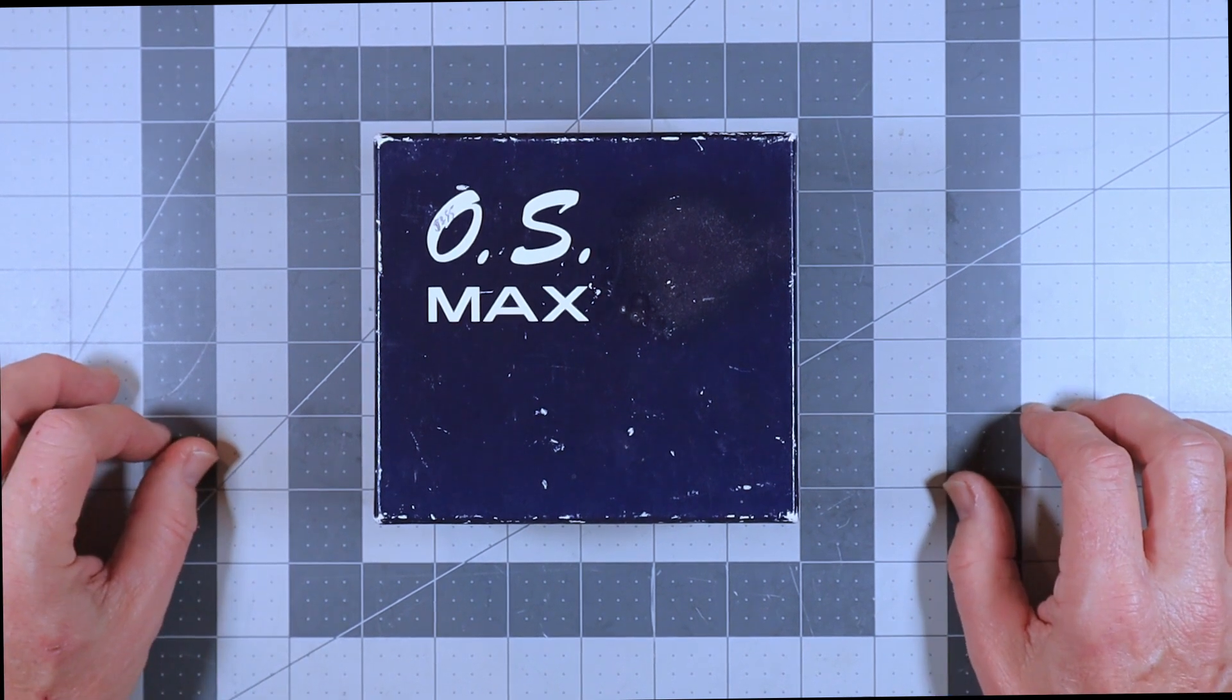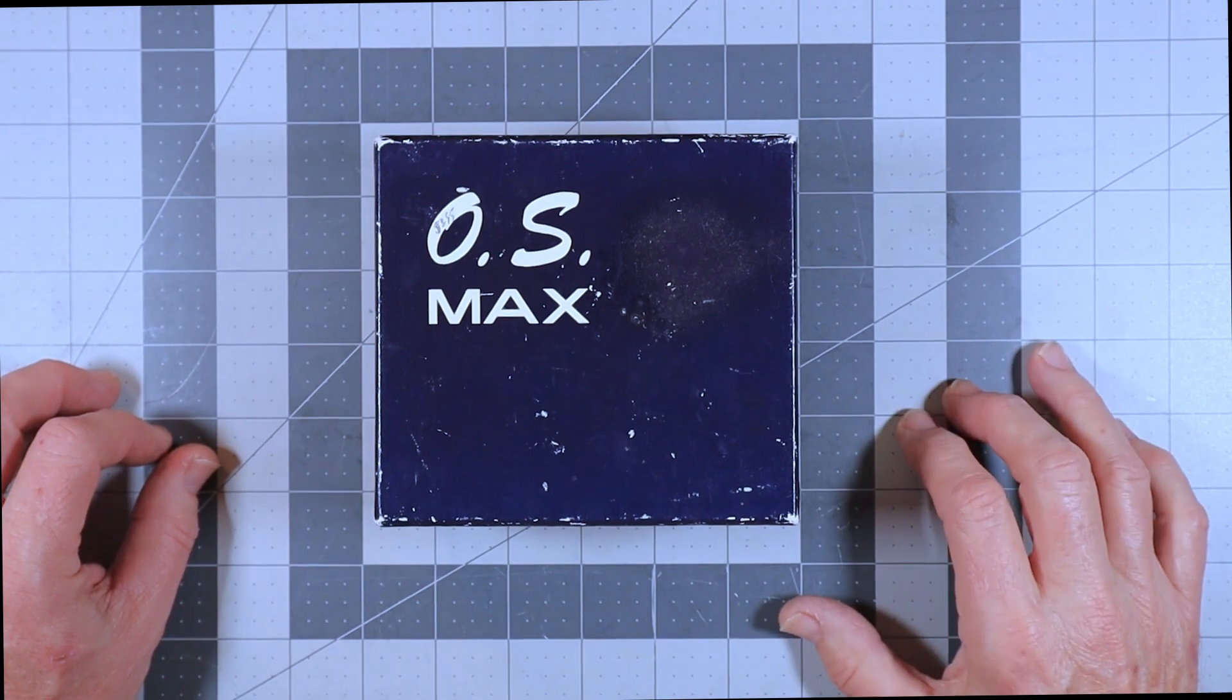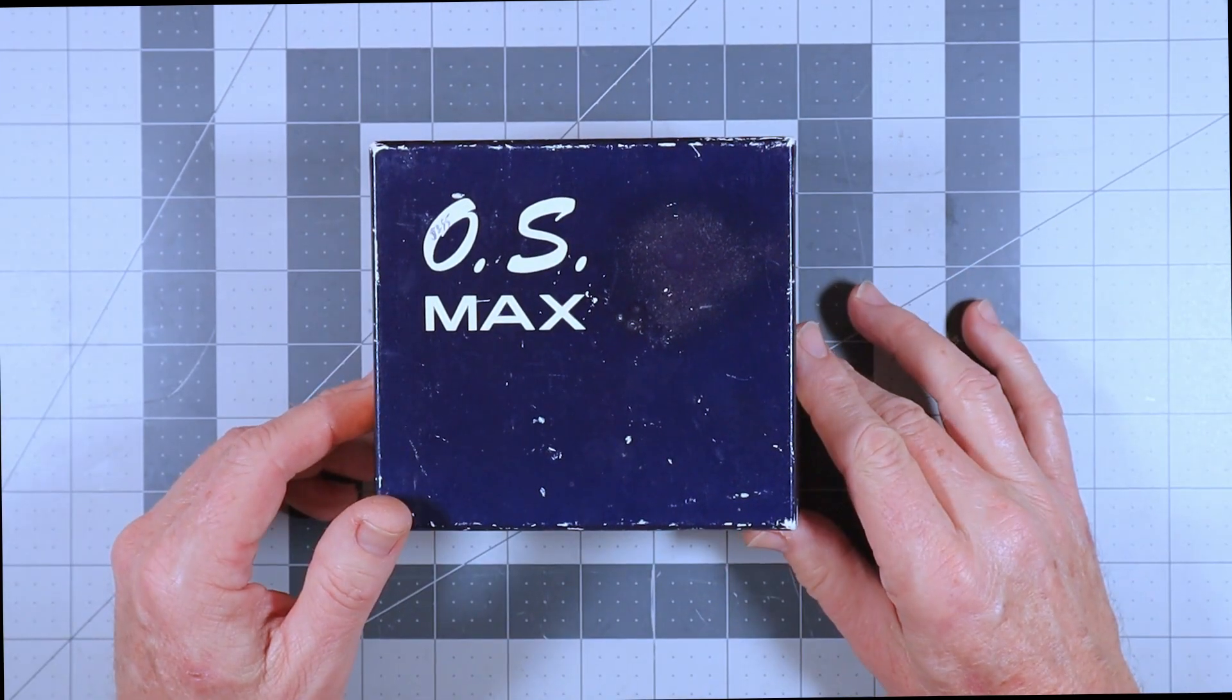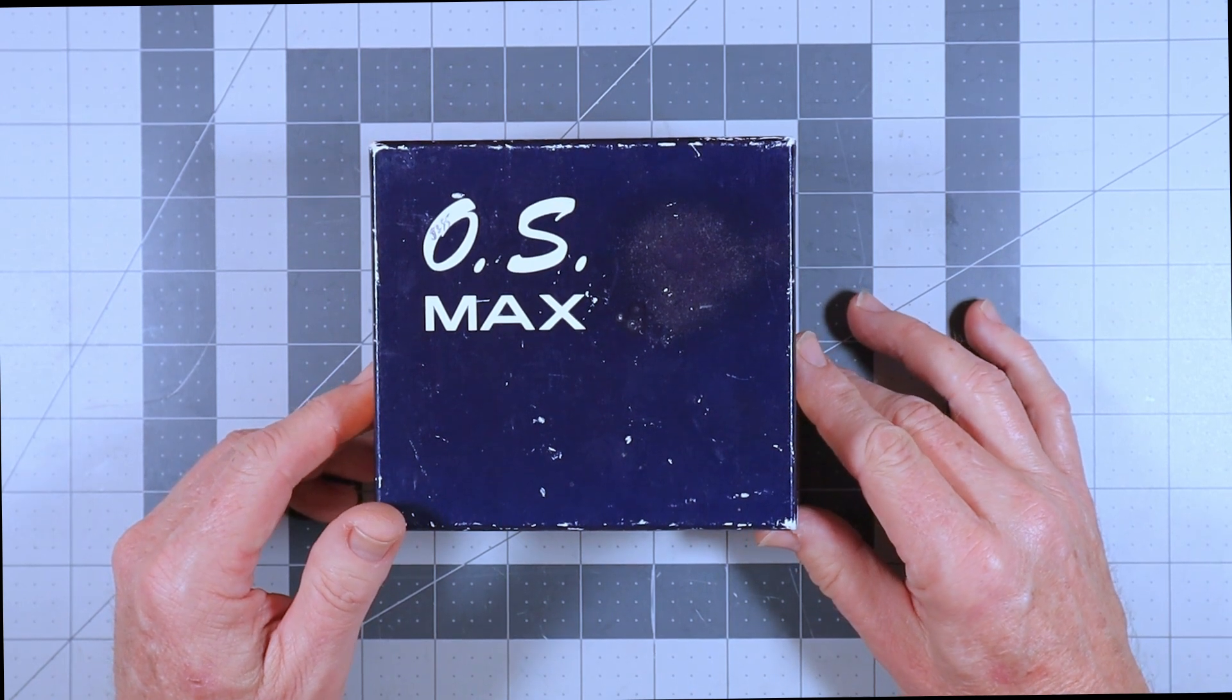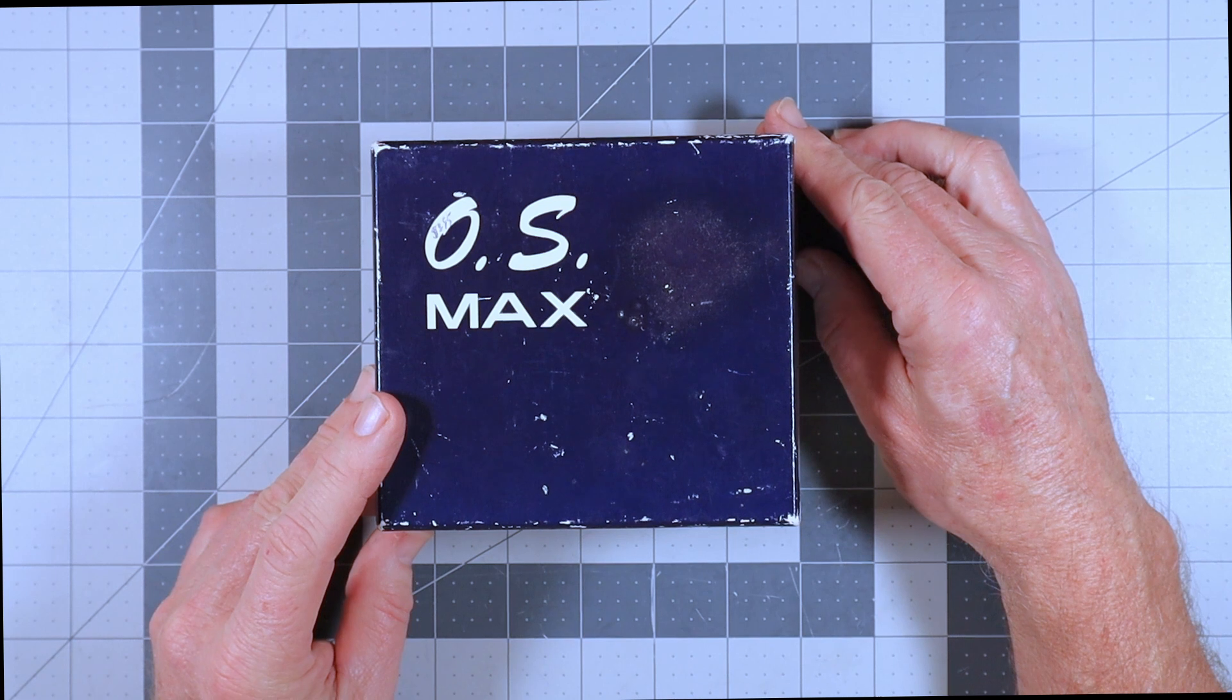Welcome to another Look Inside video. As you can see here I've got an OS Max engine box that dates back to probably the late seventies, early eighties. This is a recent acquisition that I just got from eBay.